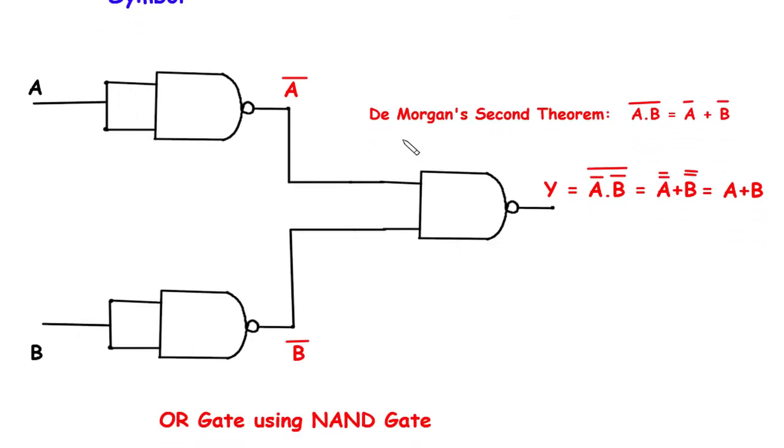According to De Morgan's second theorem, a dot b bar is equal to a bar plus b bar. Using this De Morgan's second theorem, we can make OR gate using NAND gate.